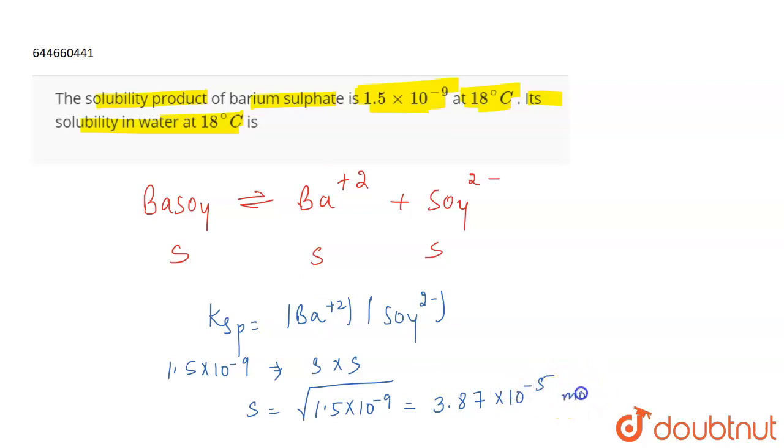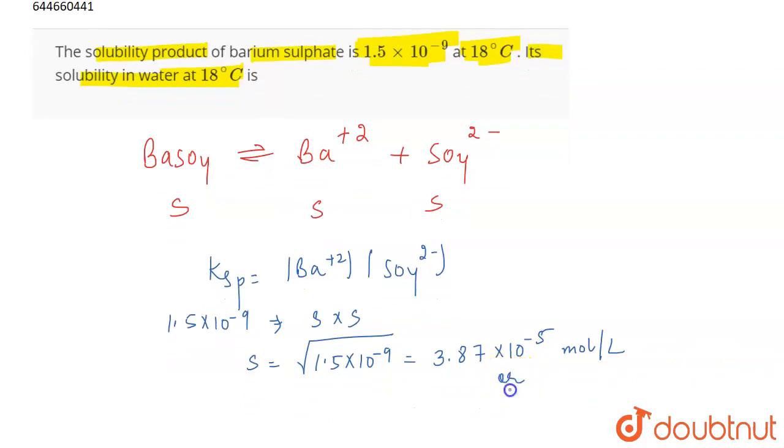And if you have to write it to one decimal place, you can write as 3.9 into 10 to the power minus 5 mole per liter. So this will be the solubility for BaSO4 in water.